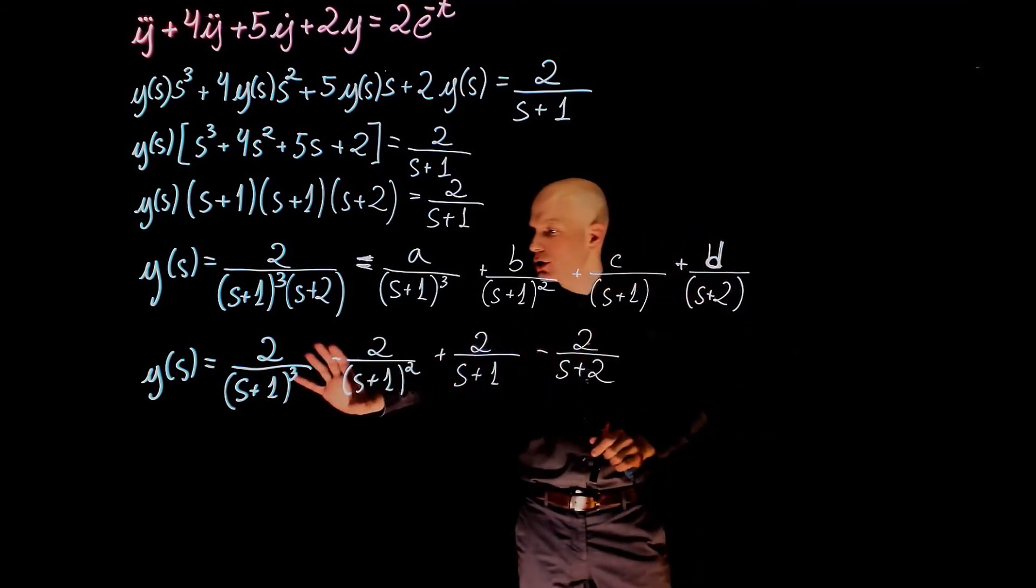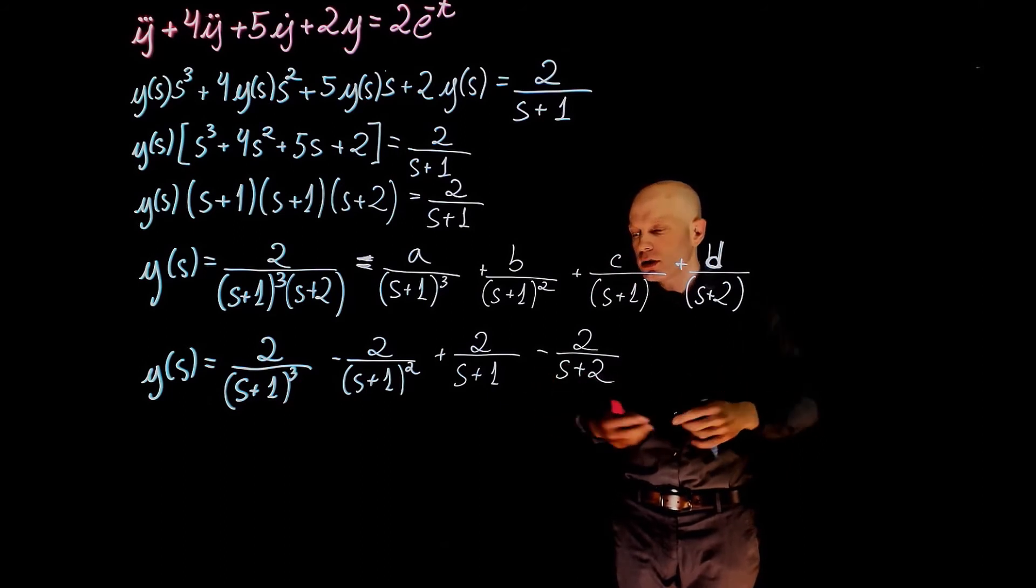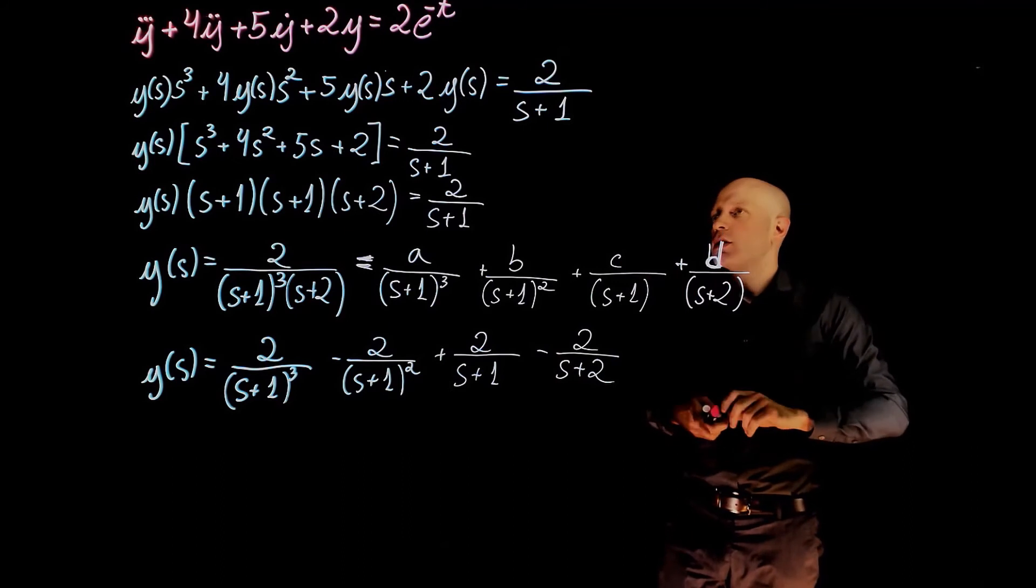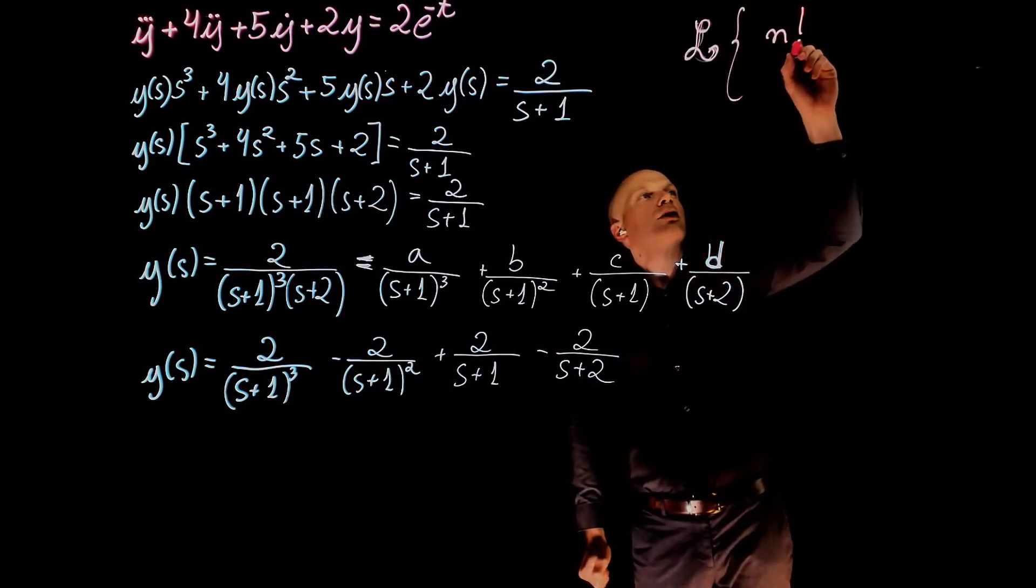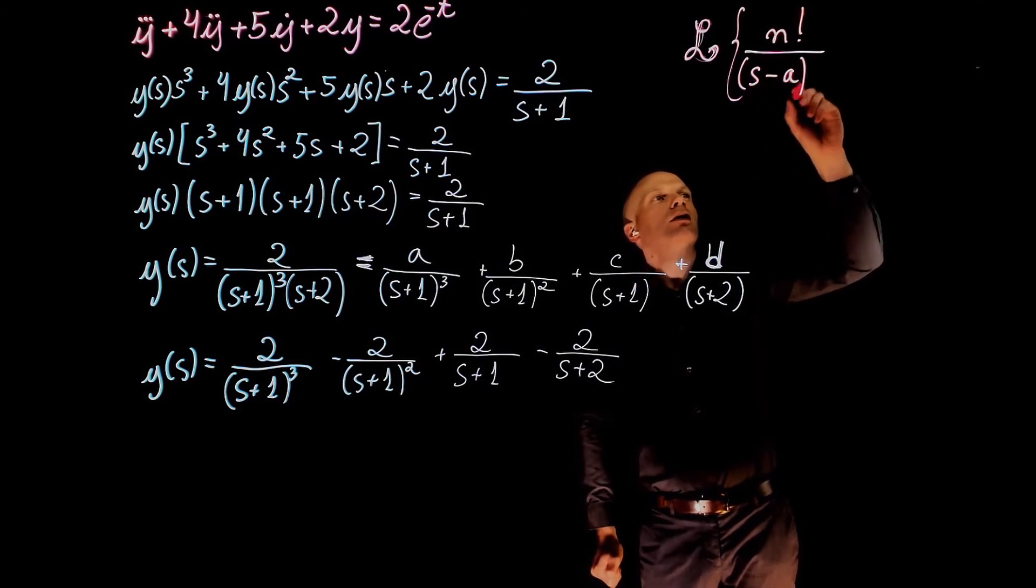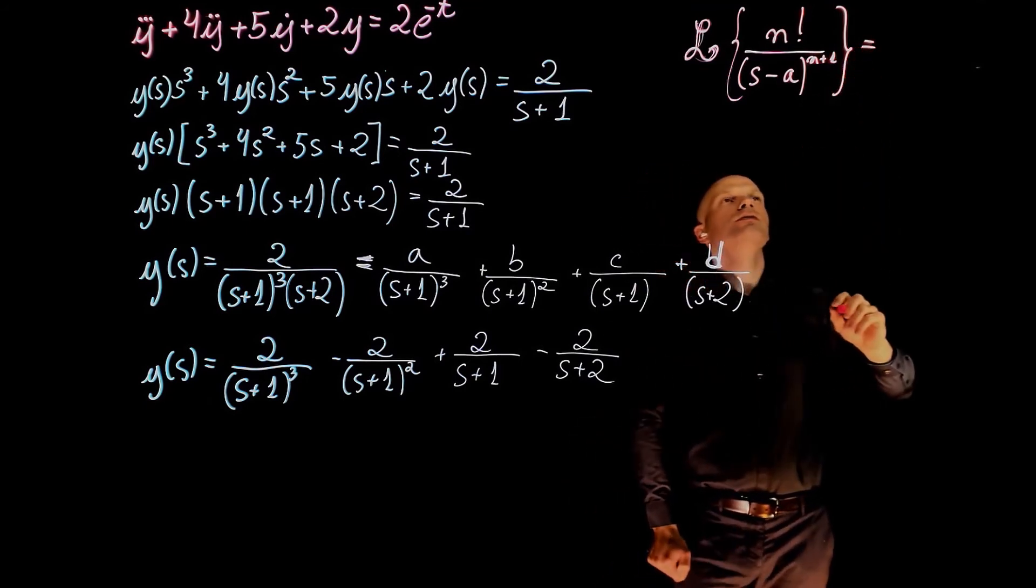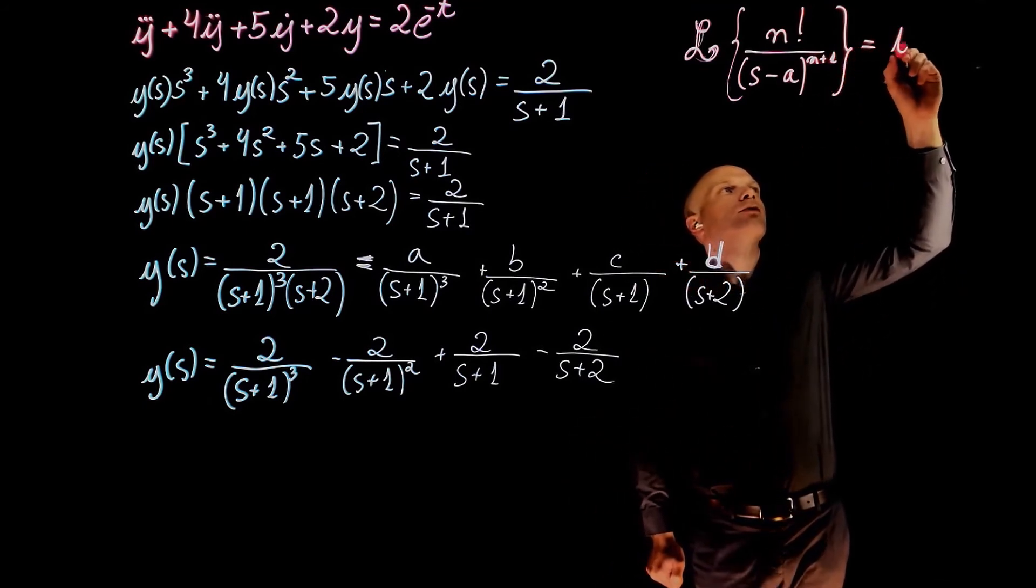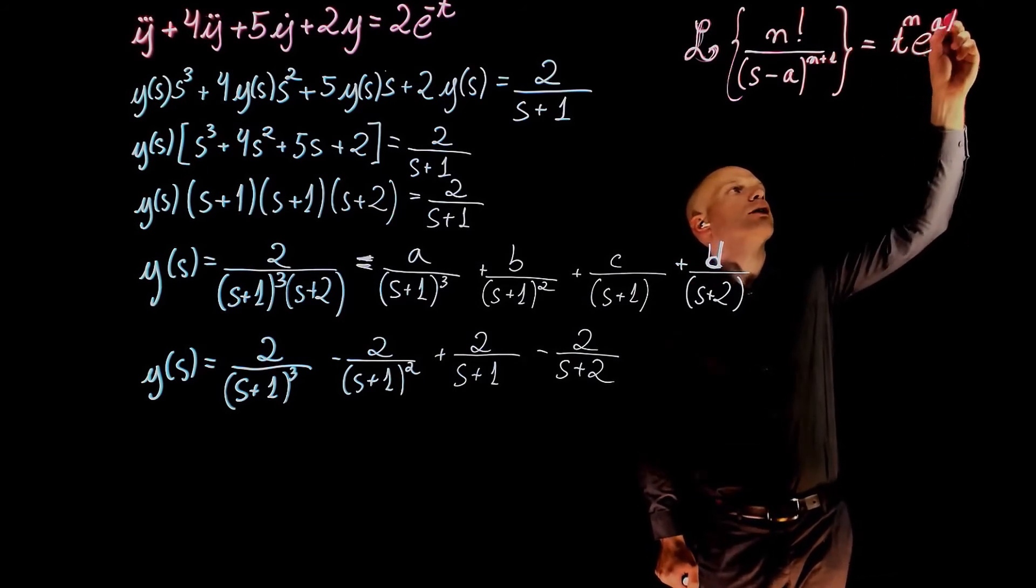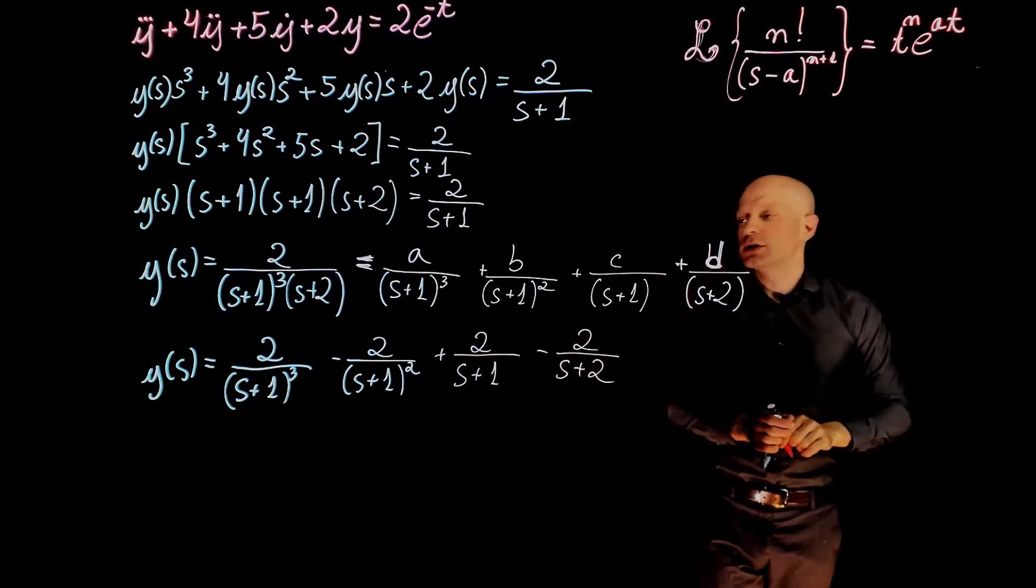Each of these fractions will fall into the exactly same inverse Laplace case. The only inverse Laplace formula that we need is n factorial divided by s minus a to the power of n plus 1 equals to t to the power of n exponential of at. You see that all these fractions fall in this category here.